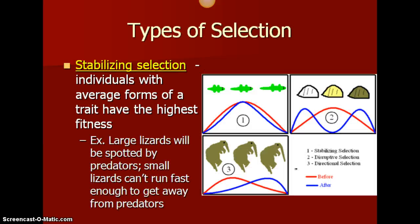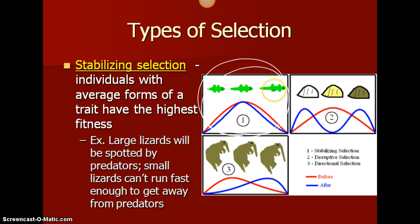In stabilizing selection, individuals that have the average forms of a trait have the best fitness. We're looking at one particular trait, and the majority of individuals have the middle-of-the-road value for that trait. The example shown here is lizard size: small lizards can't find enough food and can't get around easily; large lizards are easy to see so birds eat them more often; medium-sized lizards have ideal conditions to get the most food and camouflage themselves.